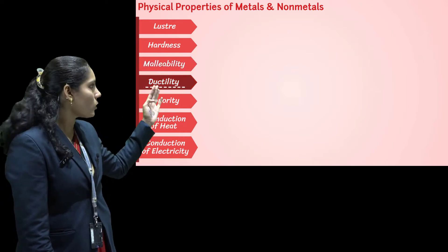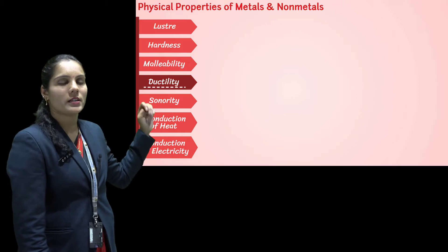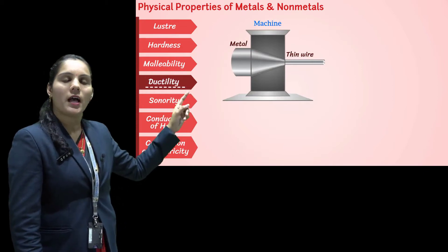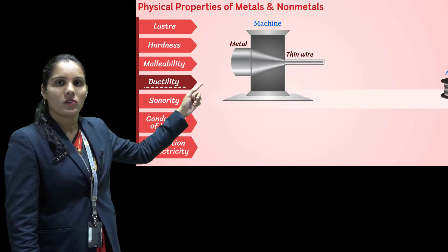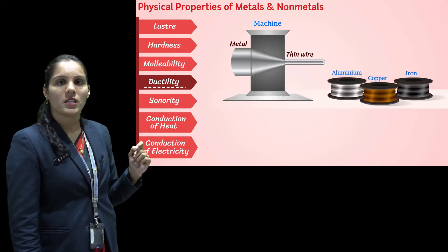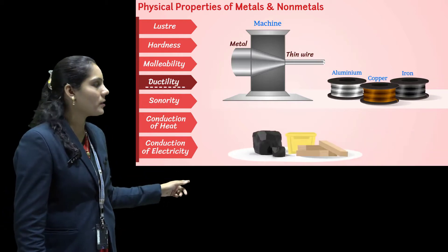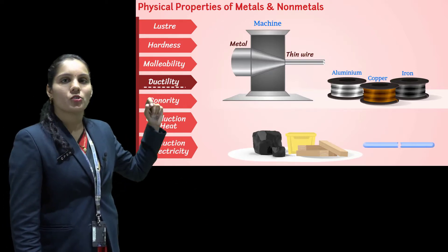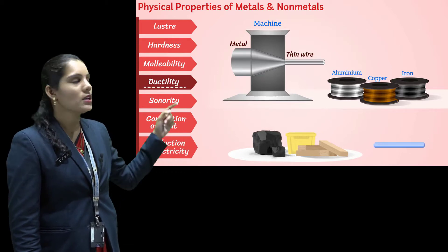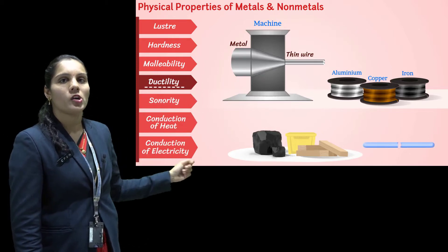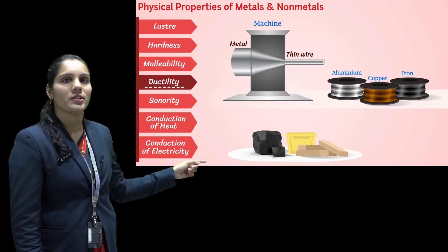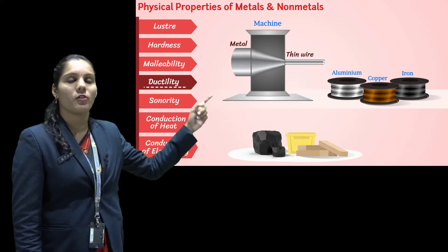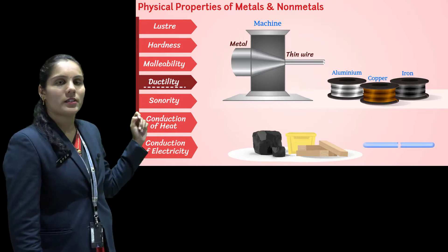The next property of metals and non-metals is ductility. For ductility, I have a small iron piece. If I try to draw a wire from that piece, I can easily draw the wire with the help of a machine. But for non-metals, if I try to draw wires, I am not able to — they break into small pieces. So metals are ductile in nature and non-metals are non-ductile in nature. That is why aluminium wire and copper wire are used for electrical appliances.